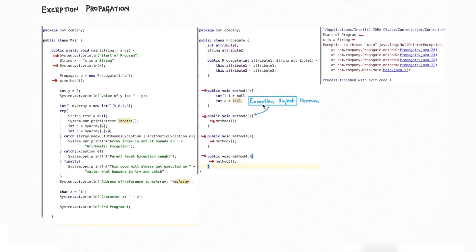The exception has now propagated from method one to method two. Method two also has no catch block, so it looks at the call stack and sees that method three called it. So method two passes the exception object to method three. The same thing happens — method three is not handling any exceptions, so it looks at the call stack, finds that method four called it, and passes the exception object to method four. Method four also has no exception handling code, so it looks at the call stack and finds that the main method called it. So it passes the exception object to the main method.